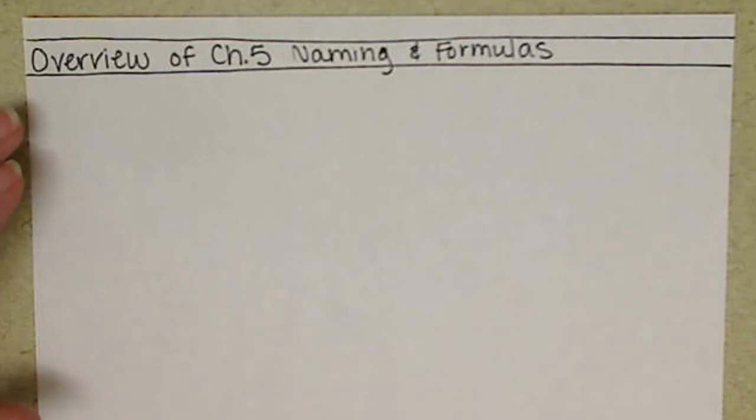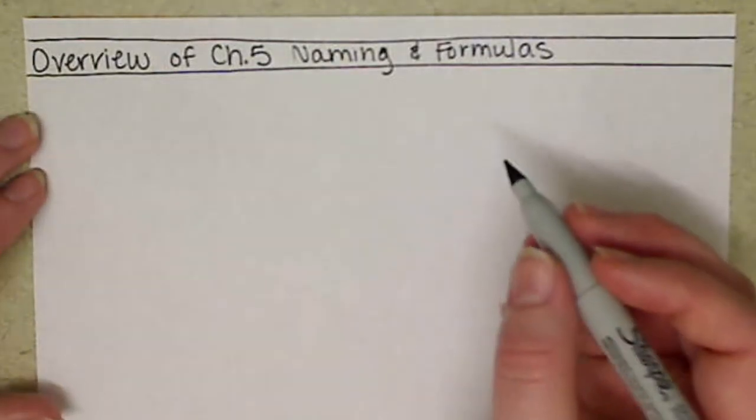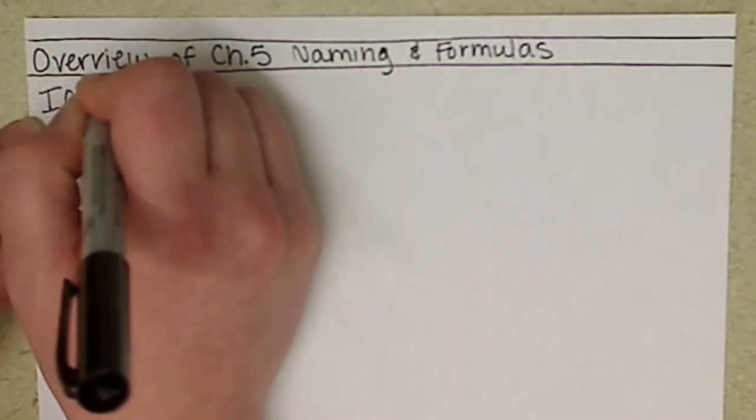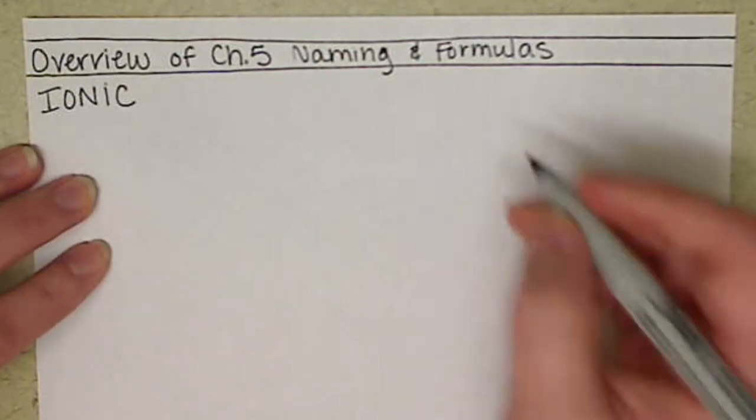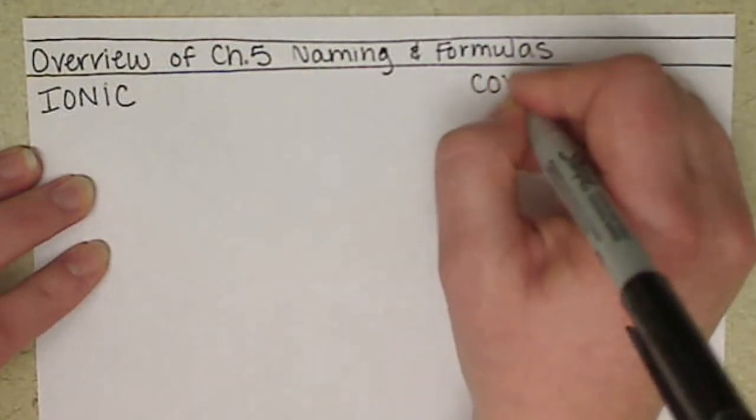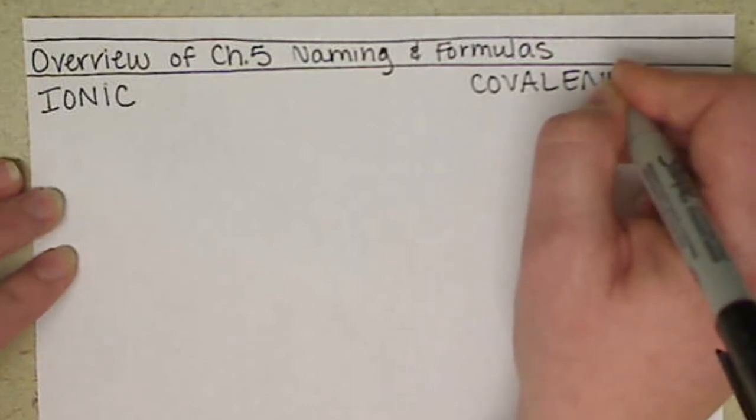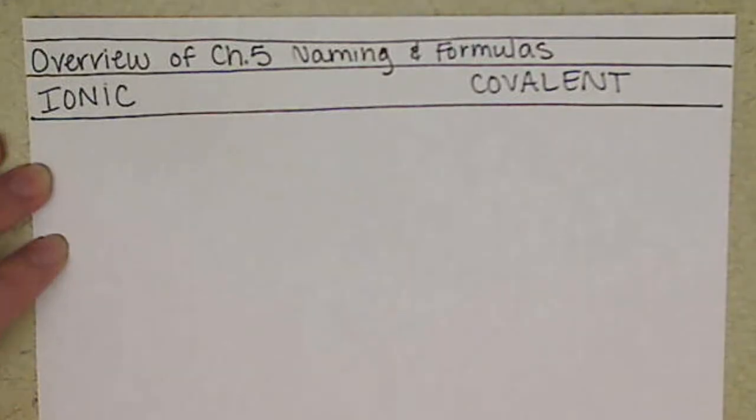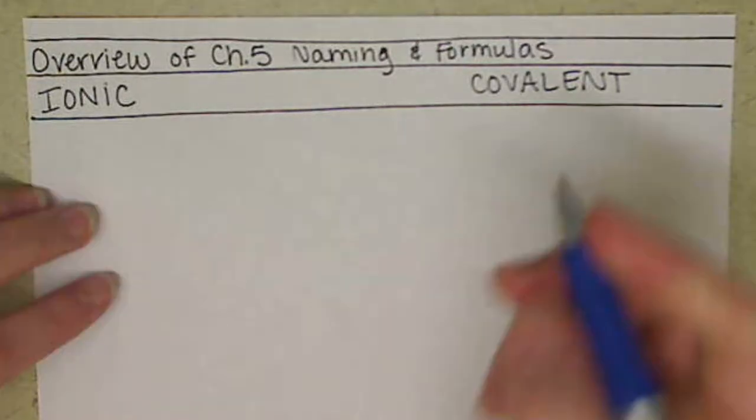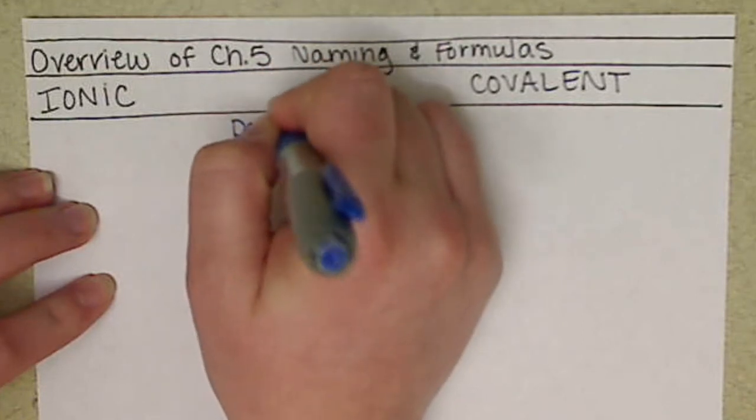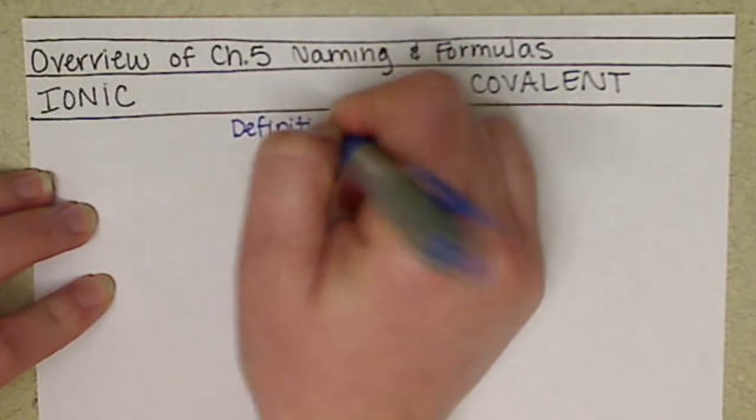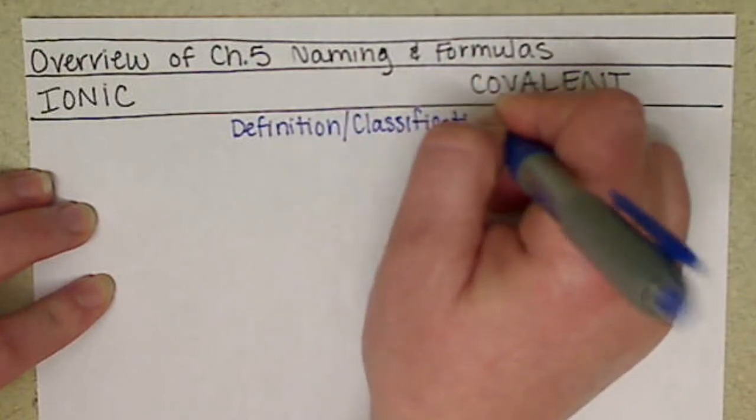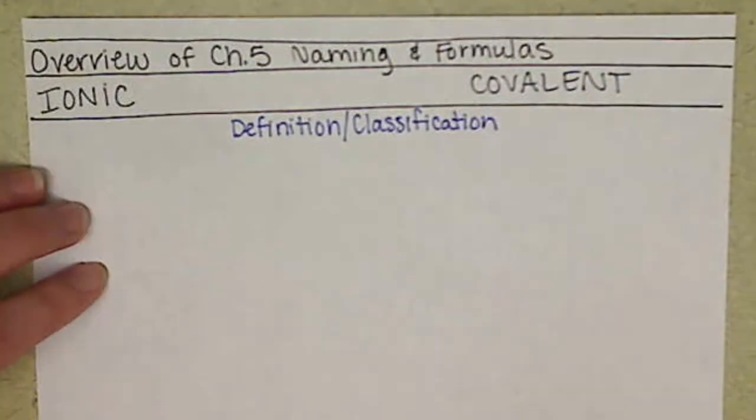What we're wanting to do is classify and identify between ionic compounds, that's what we started with, and covalent, which was the second thing we covered. Let's look at our definition or classification. How do we distinguish between ionic versus covalent?